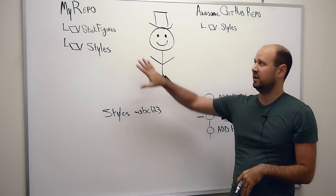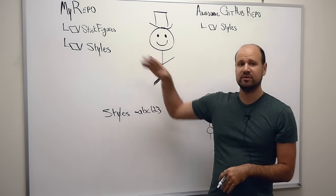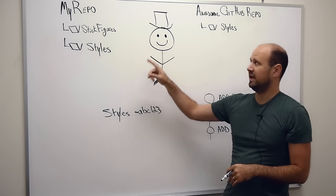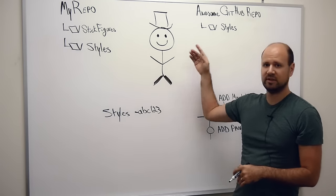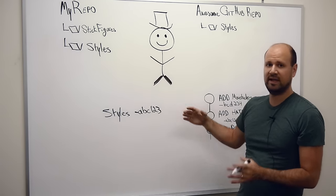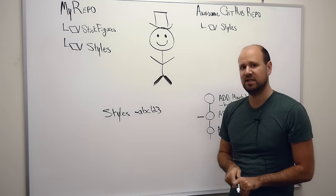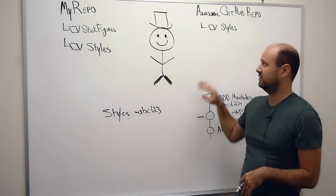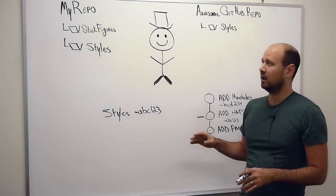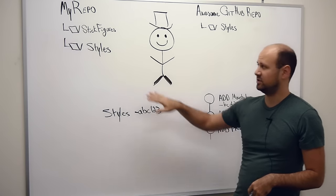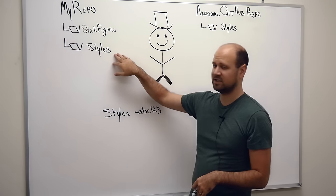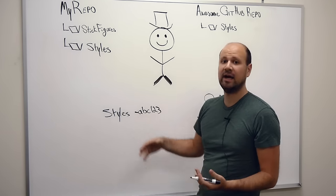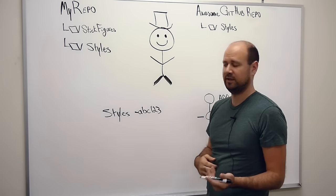It also means that anyone else on my team that pulls down my repo would pull down the submodule, it would look at what repo it's referencing and what commit, and now they're using the exact same version as me. When you do want to update what version of the submodule you're using, all you need to do is go into the submodule — because it's a Git repository — and just check out the version that you want.